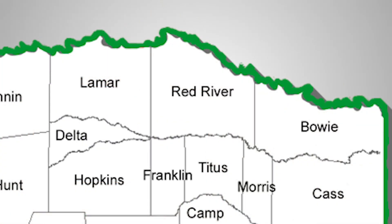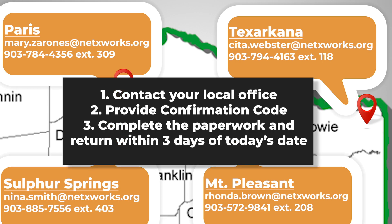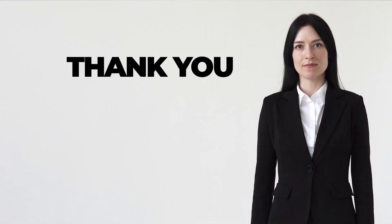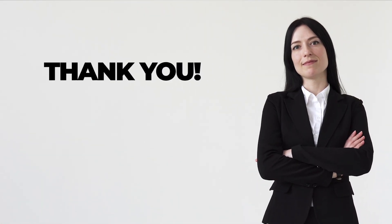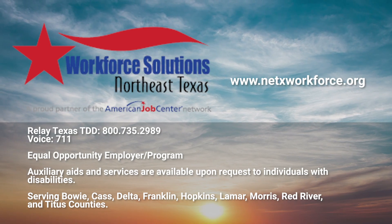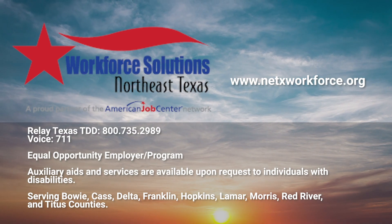Now on to Part 2. You must contact your local office to complete the paperwork. You may do so by either email or phone. The contact information is listed by your local workforce office. Please provide your name and confirmation number in the email or phone call to prove that you have completed Part 1 of the process. Remember, you only have 10 days from the date on Form 2588 provided to you by Health and Human Services to complete this process. Thank you for taking this time with us to learn about the workforce application process and benefits. We hope it helps you take the next step forward. If you have any questions or want to learn more about Workforce Solutions Northeast Texas, please visit us at netxworkforce.org.